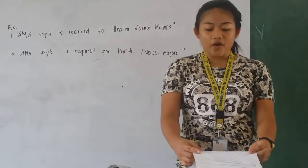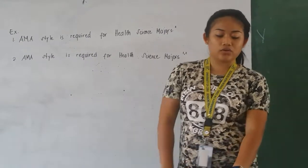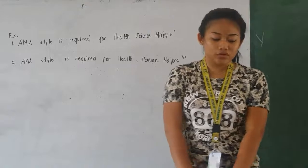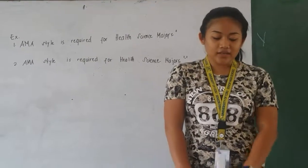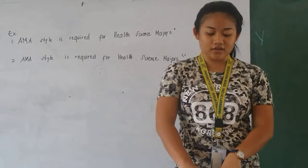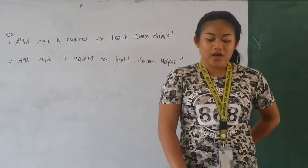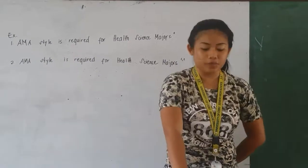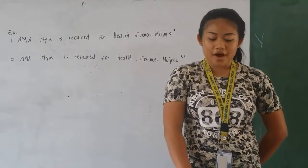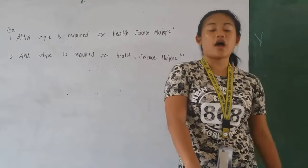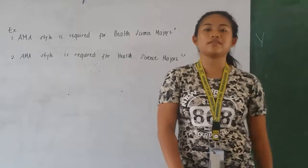When you use a direct quote of four lines or more, you should use a block notation that is indented and single-spaced, with the reference number placed after the period. The reference numbers are based on how many sources the paper uses. That's all.